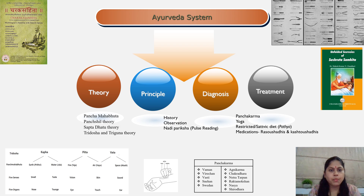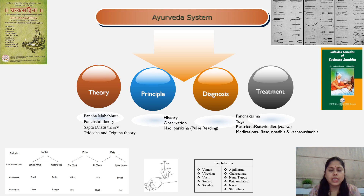The most important ancient authoritative writings on Ayurveda are Charak Samhita, Shushrut Samhita, Bhavaprakash Nighantu, Sharangadhar Samhita, Ashtanga Hridayam, Ashtanga Sangraha, and Madhav Nidanam.